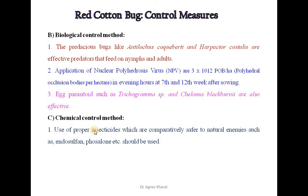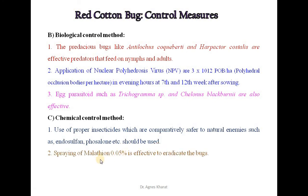For chemical control, proper insecticides that are comparatively safer to natural enemies such as endosulfan, phosphamidon, etc. should be used. Spraying of malathion 0.05% is effective to eradicate these bugs.